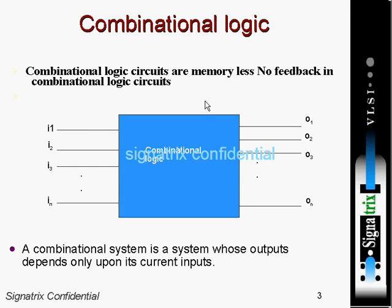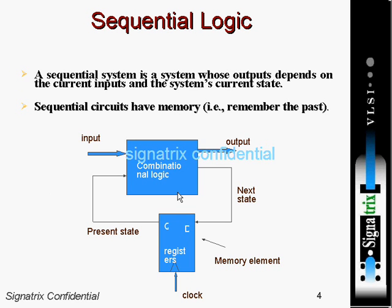Now you see a block diagram of sequential logic. To implement sequential logic, one combinational logic circuit and one register are used. This register is used to save the state of the circuit, while the combinational logic is used to evaluate the output. Here, the output of the combinational logic will not only depend on the input but also depend upon the present state — this is the memory element in sequential logic.